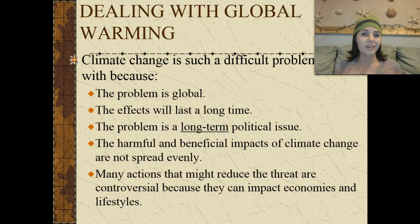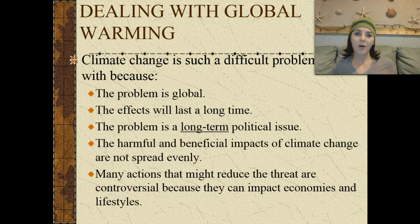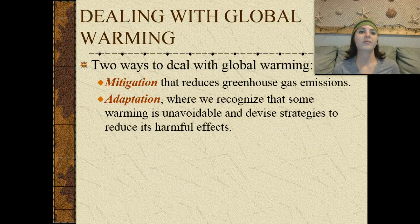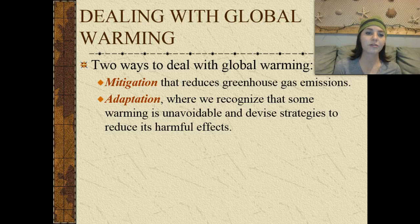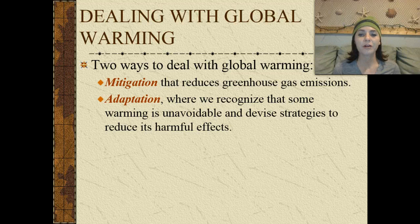In America, we like excess, and a lot of the strategies for helping us deal with global warming are going to include decreasing our productivity and decreasing the amount of resources that we're using. Dealing with global warming, there are two ways: through mitigation, which reduces greenhouse gas emissions, and through adaptation, where we recognize that some warming is unavoidable and we devise strategies to reduce its harmful effects.